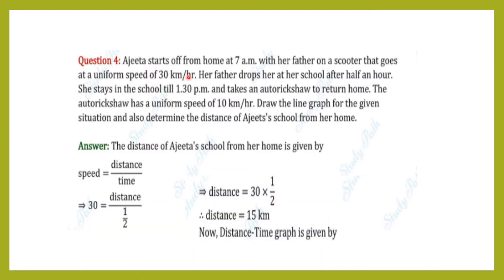Ajita starts off from home at 7 a.m. with her father on a scooter that goes at a uniform speed of 30 km per hour. Her father drops her at her school after half an hour. She stays in the school till 1:30 p.m. and takes an auto rickshaw to return home at a uniform speed of 10 km per hour. Draw the line graph and determine the distance of Ajita's school from her home. The distance is given by speed equals distance divided by time.